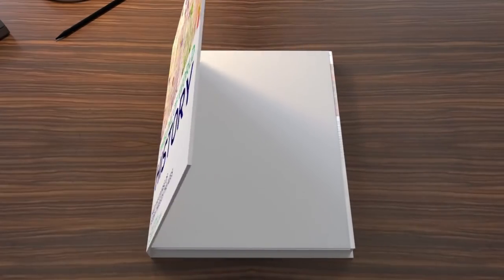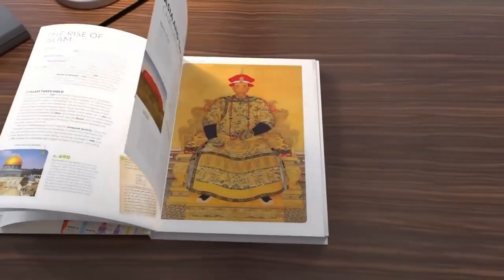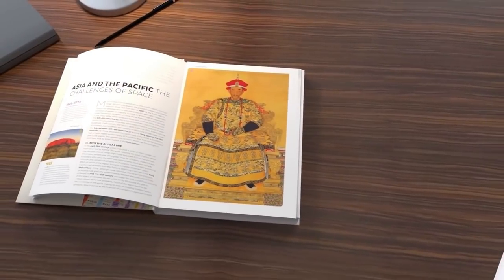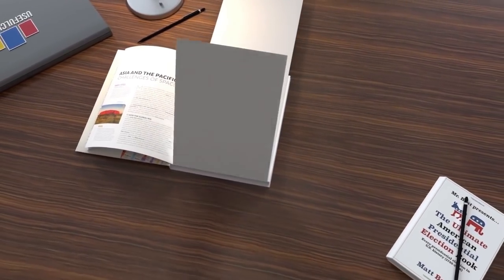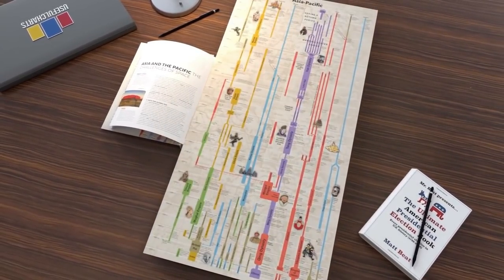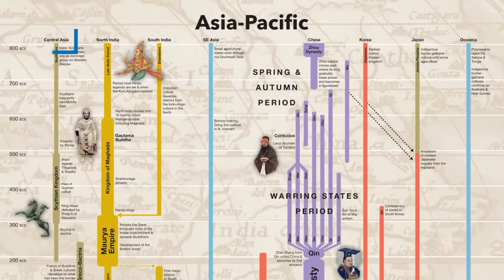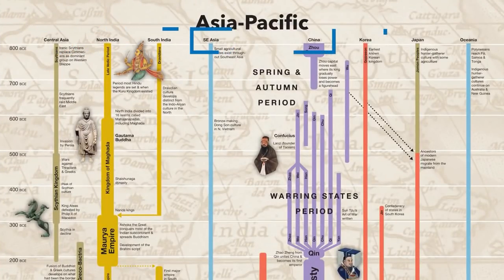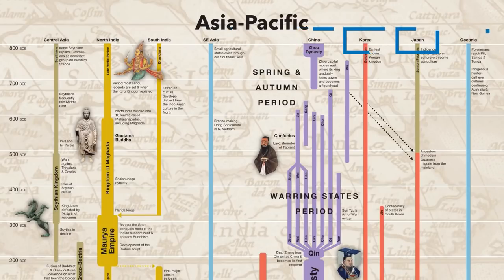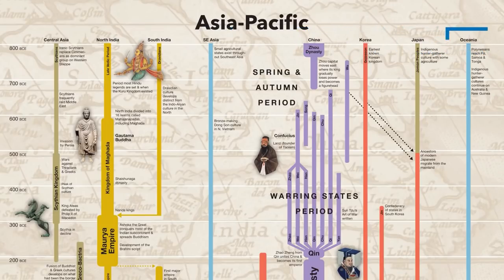When you open the book, you'll find that there are four sections with foldout charts. Today we're going to look at the foldout chart for Asia Pacific. This chart covers Central Asia, North and South India, Southeast Asia, China, Korea, Japan, and Oceania. The westernmost parts of Asia are included on the Africa and Middle East chart, which we'll be covering in a separate video.